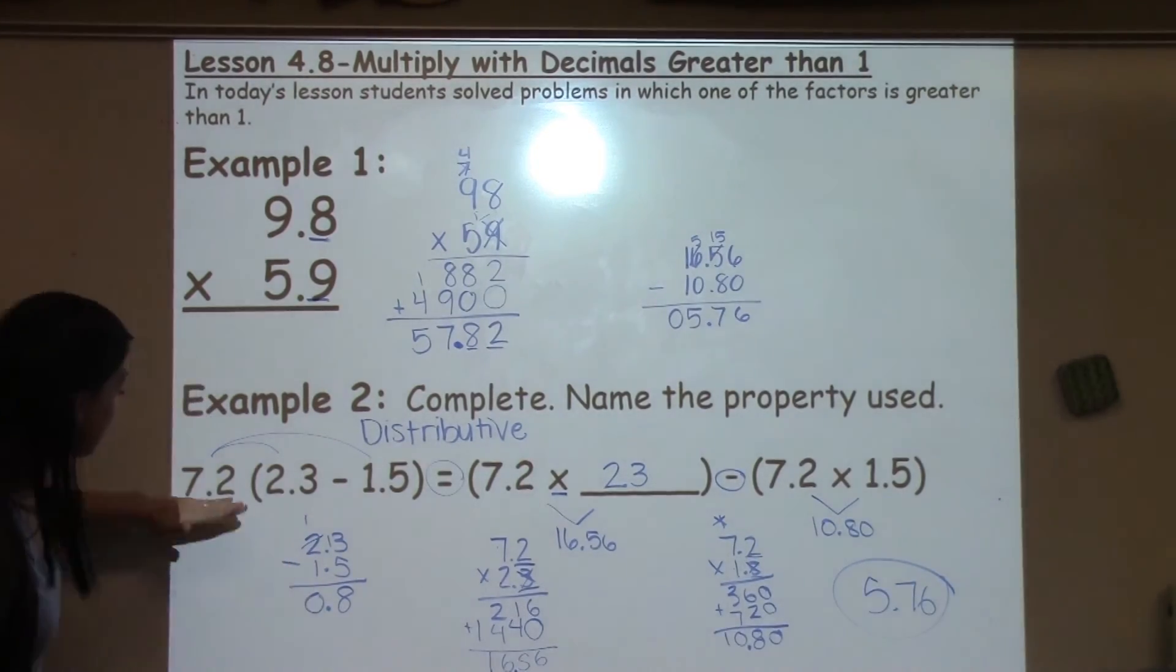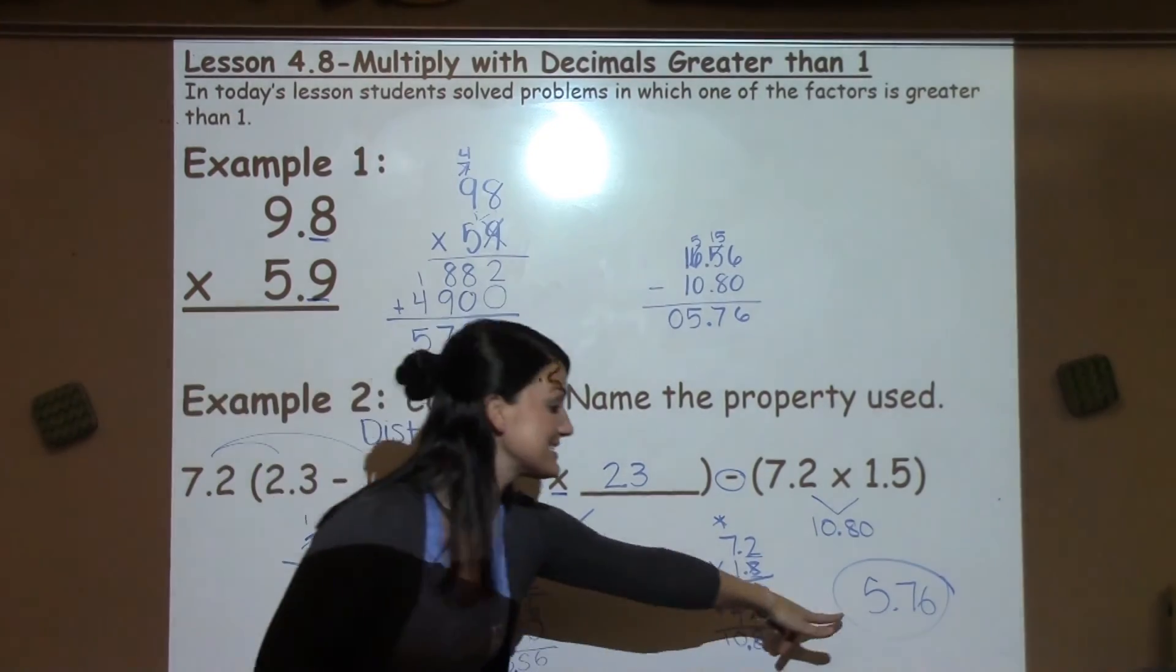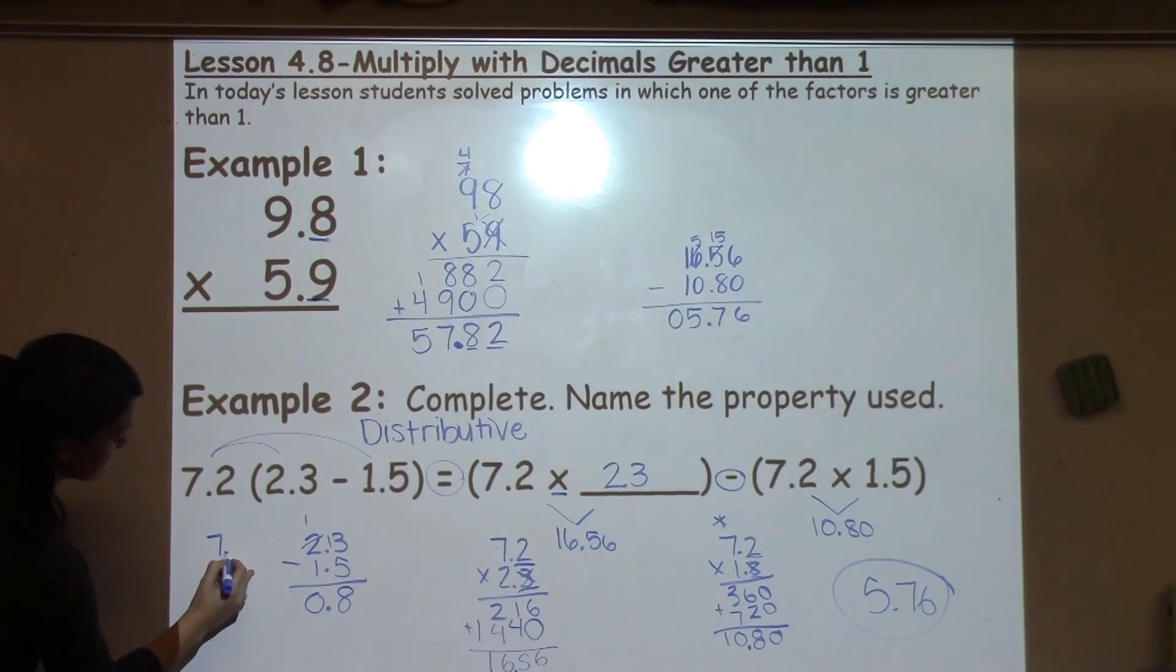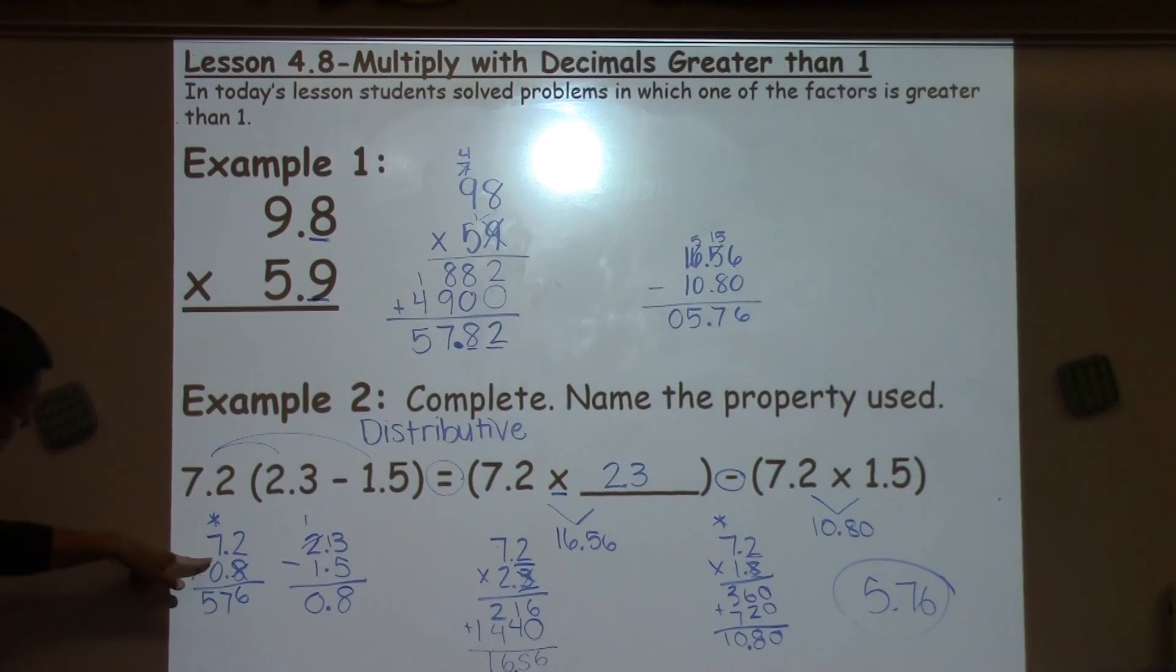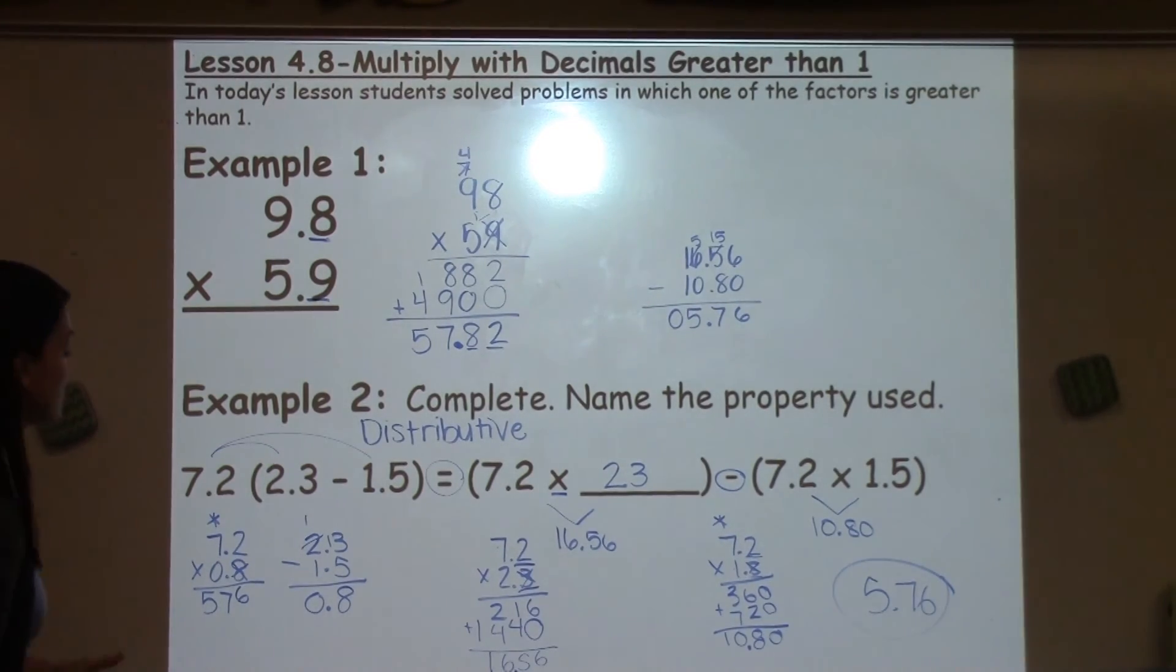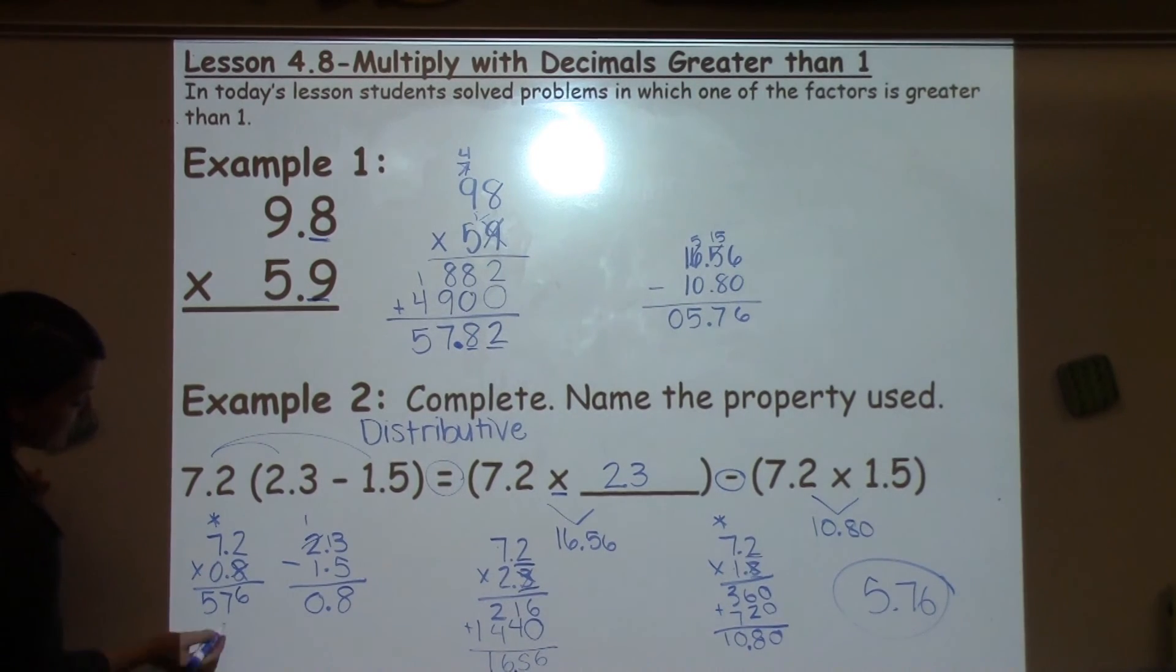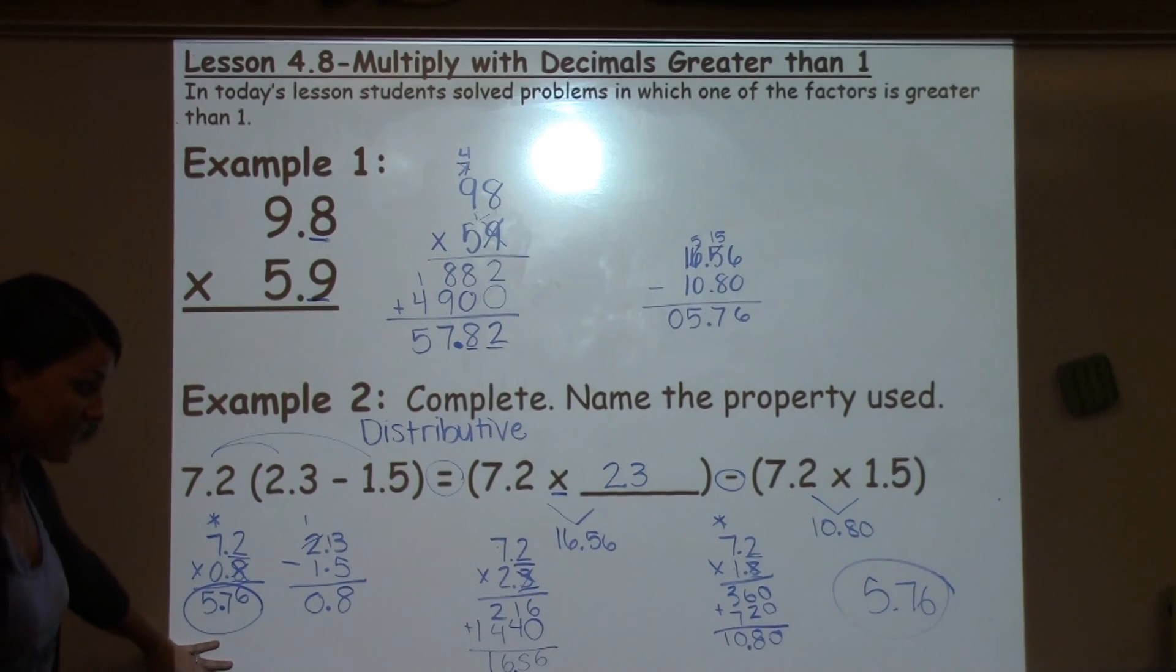I should be able to take 0.8 and multiply it by 7.2 and get the exact same answer in less steps. Let's try it out. 8 times 2 is 16, carry the 1. 8 times 7 is 56 plus 1 is 57. I'm done with my 8 and 1. I could add a 0 and keep going, but I know that 0s, when I multiply anything by 0, it just is 0. So I really don't even need to continue. I have 2 total numbers behind the decimal in my problem, so I need 2 total numbers behind my decimal in my answer for a final answer of 5.76, which matches the other side.